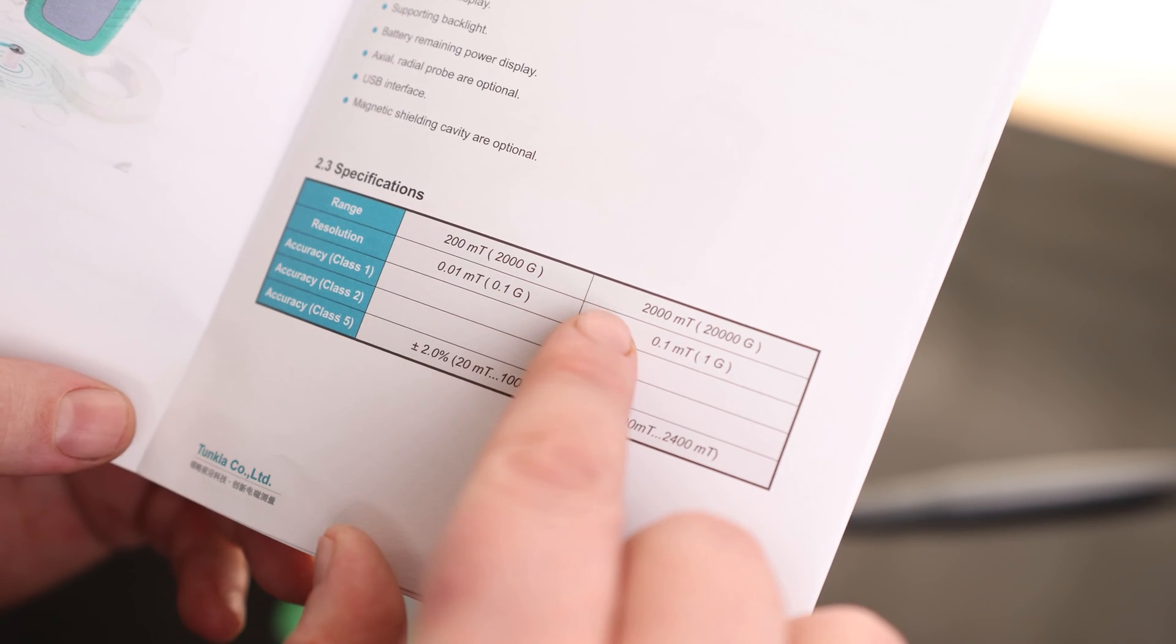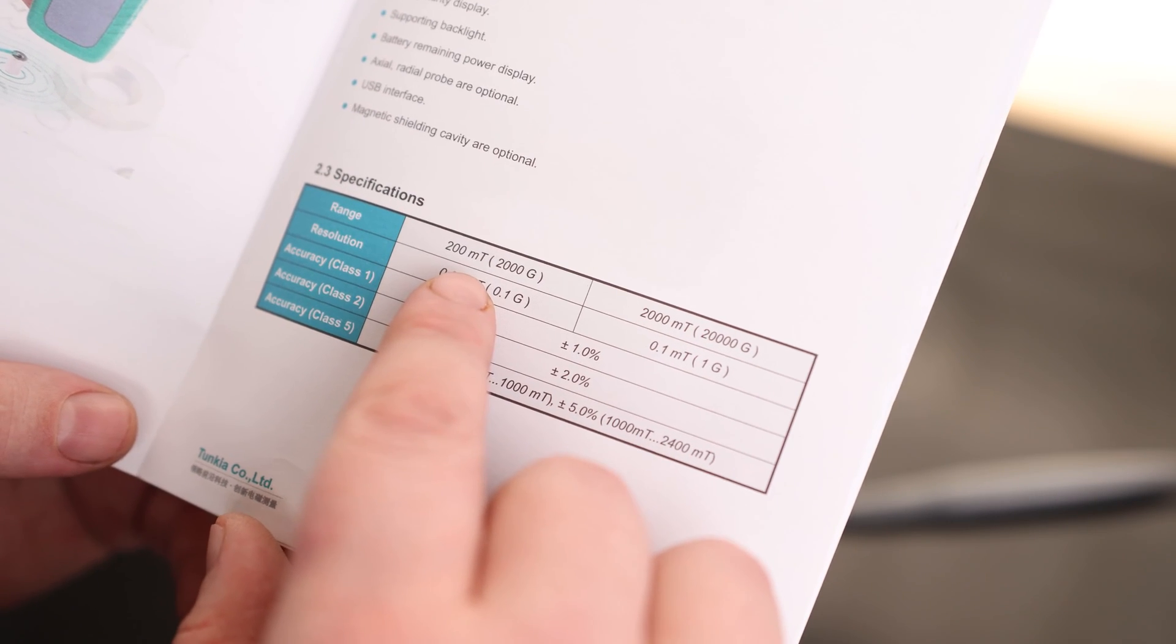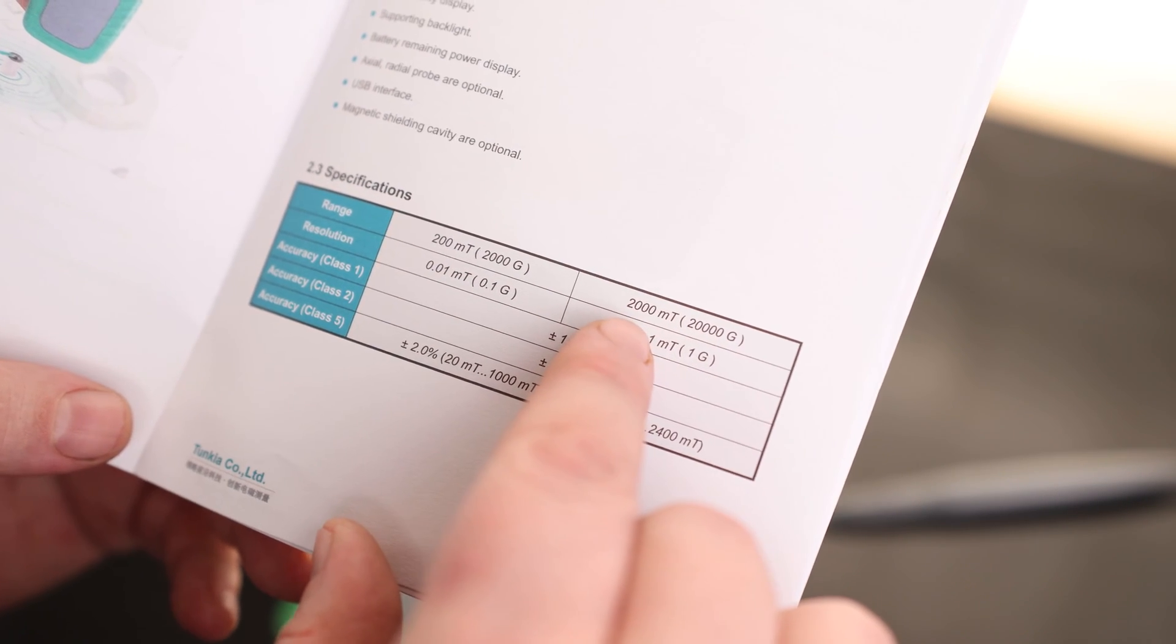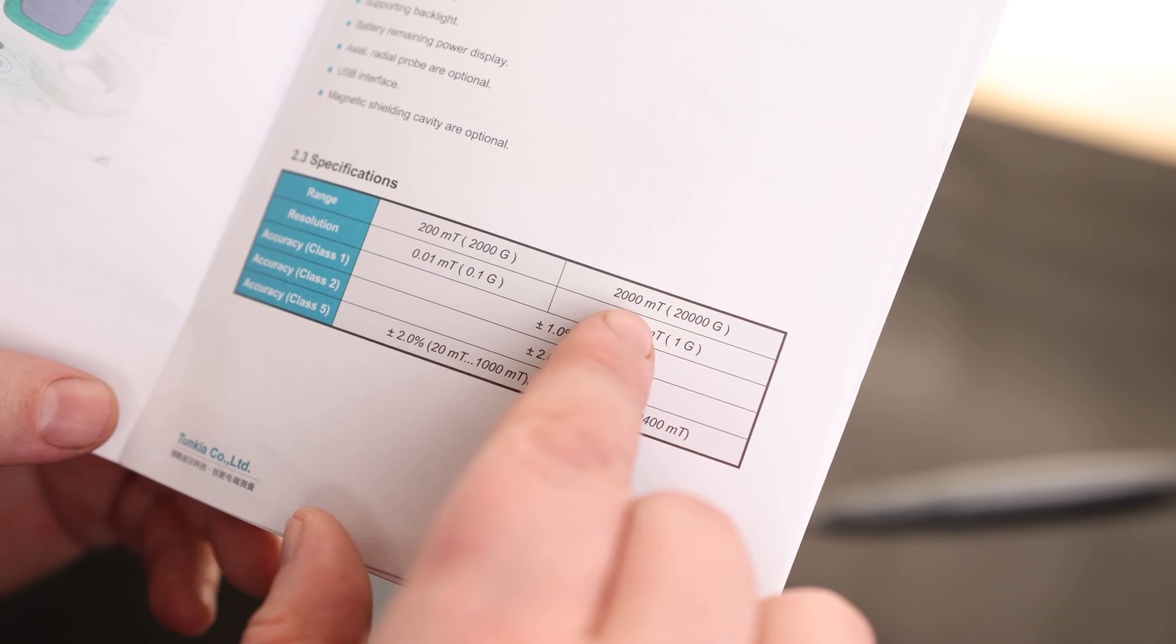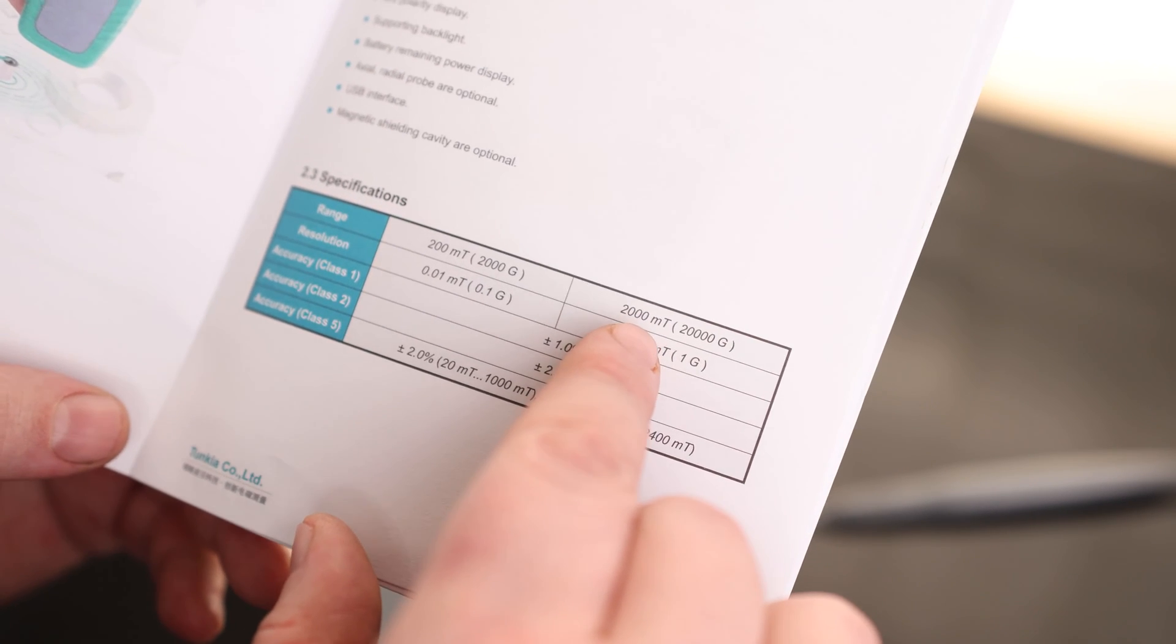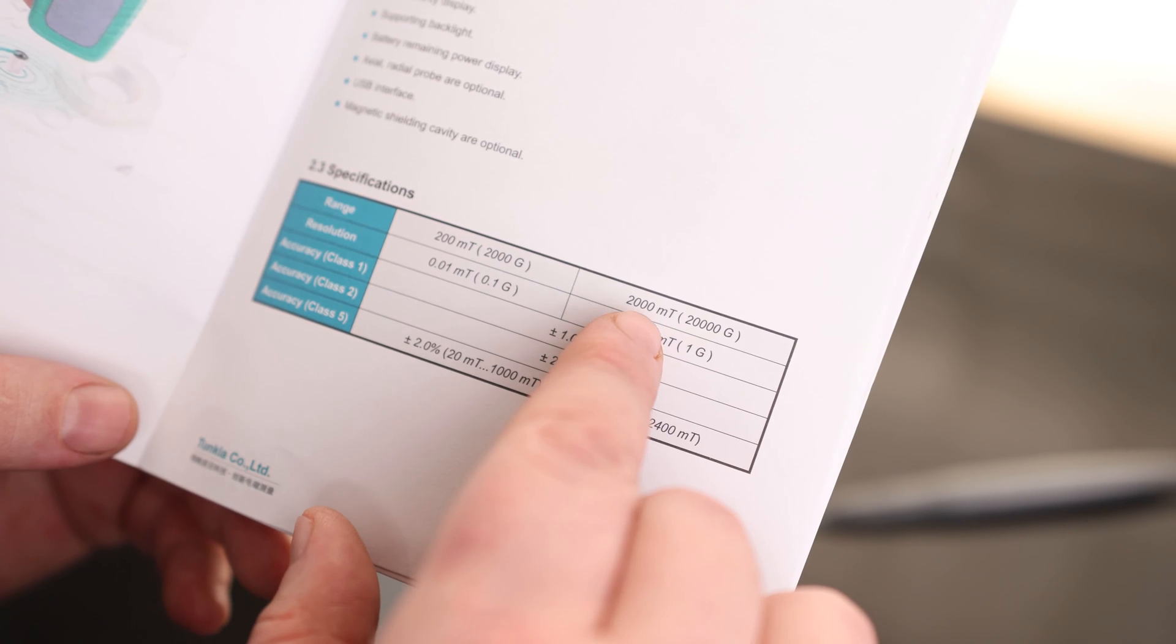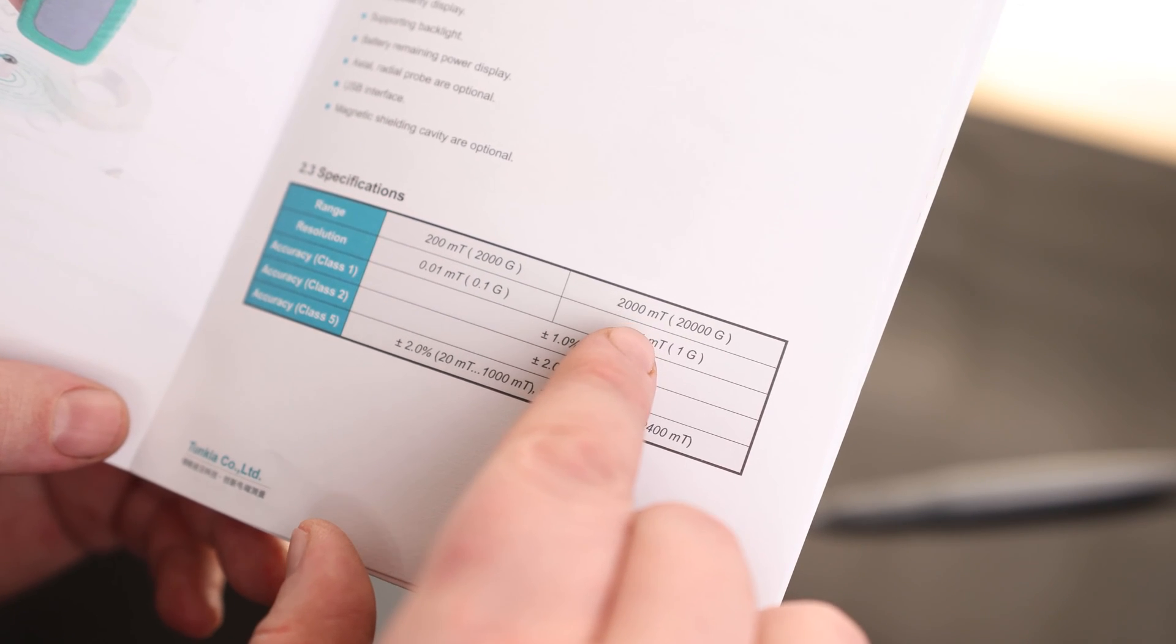So in the instructions, it gives you the range that this is capable of. So this is 200 milliteslas up to 2,000 milliteslas. So that is equivalent to two Teslas. So to put that in perspective, one Tesla is capable of lifting a car. So this can read up to two Teslas. So that's very impressive.